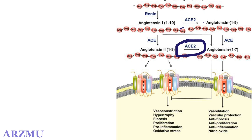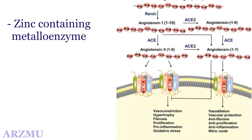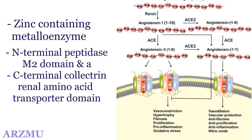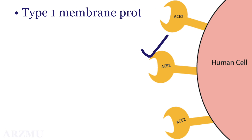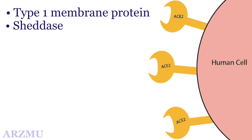ACE2 is a zinc-containing metalloenzyme located on the surface of endothelial and other cells. The ACE2 protein contains an N-terminal peptidase M2 domain and a C-terminal collectrin renal amino acid transporter domain. ACE2 is a single-pass type 1 membrane protein with its enzymatically active domain exposed on the surface of cells in the lungs and other tissues. The extracellular domain of ACE2 is cleaved from the transmembrane domain by an enzyme known as sheddase, and the resulting soluble protein is released into the bloodstream and ultimately excreted in urine.